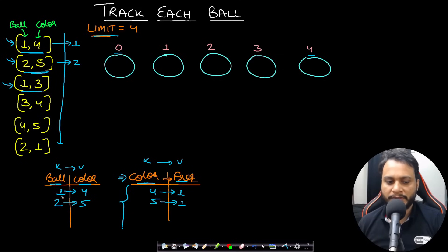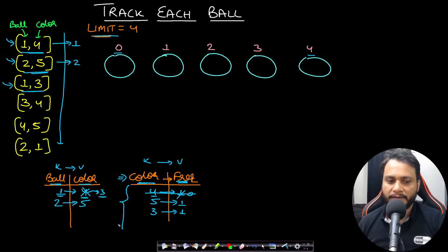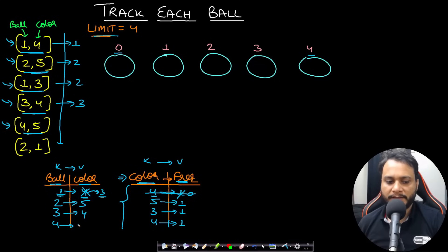For query (1, 3): ball 1's color changes from 4 to 3. Reduce frequency of color 4 in the color-frequency map; it reaches 0, so erase that entry. Insert color 3 with frequency 1. The map size is 2, so return 2. For query (3, 4): ball 3 gets color 4. Insert color 4 with frequency 1. Map size is 3, so return 3. For query (4, 5): ball 4 gets color 5, which already exists. Increment its frequency. Map size stays 3, return 3.